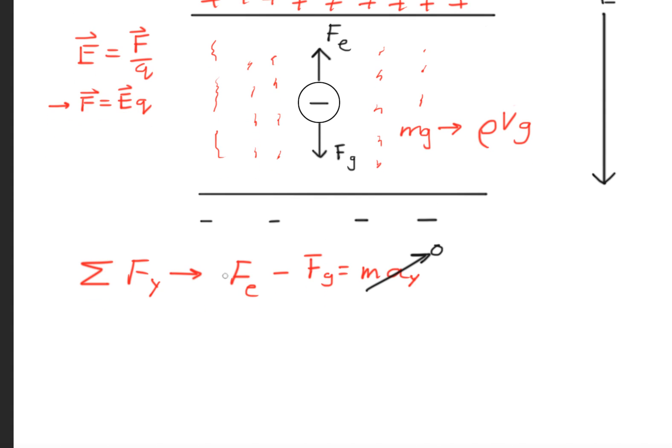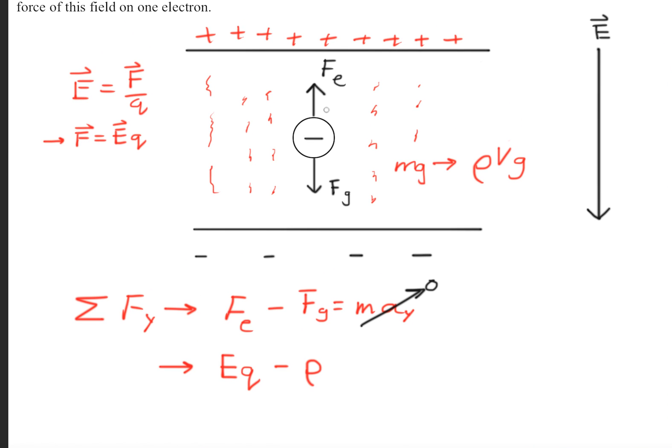So we said this electric force is equivalent to the electric field times the charge, minus the density times the volume. Now the volume of this droplet—a droplet in this case is a sphere—so the volume of a sphere is 4/3 π r³.